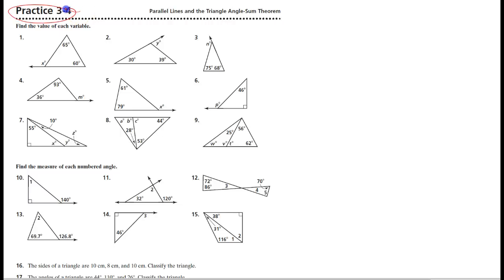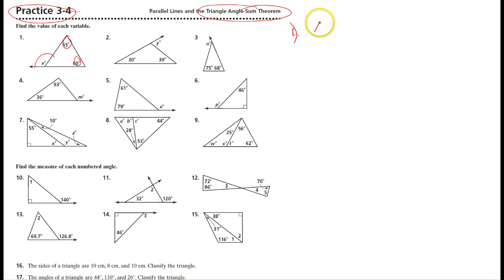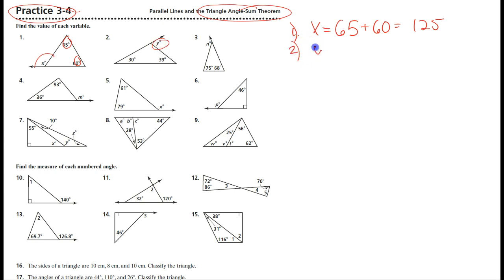Here is practice assignment 3-4 from your homework. We're talking about the triangle sum theorem, which covers exterior angles and the two remote interior ones. As stated in number one, the exterior angle equals the sum of the two remote interior ones. Number two asks why this exterior angle is the sum of the two remote interiors.